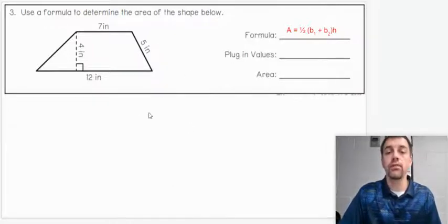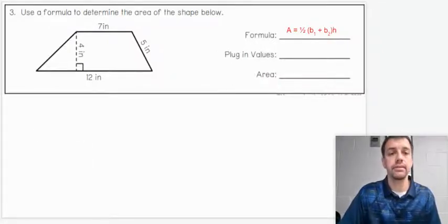So we're going to use the same formula we just saw on the last slide. Area equals one-half base sub 1 plus base sub 2 times the height. So what are our values that we're using? We're using 7 and 12 and 4. So notice that 5-inch line, we're not going to use it at all. If you want to, go ahead and cross it out. We don't need it.